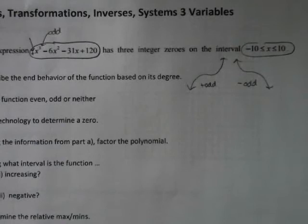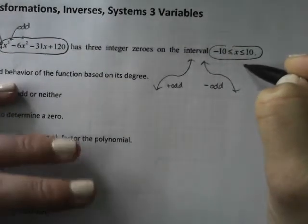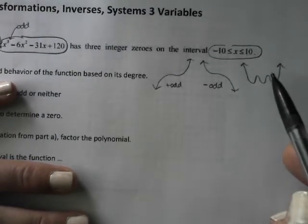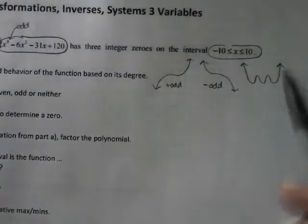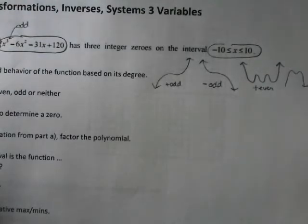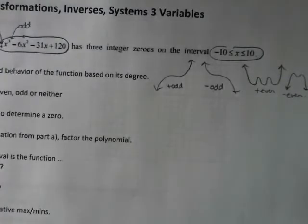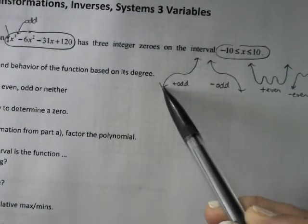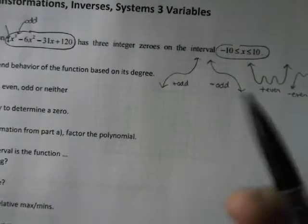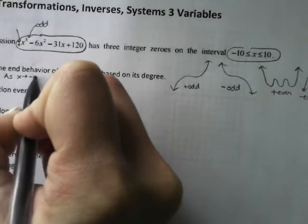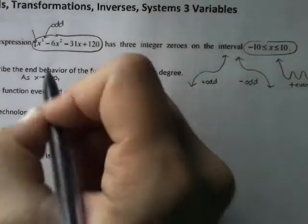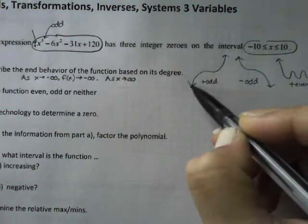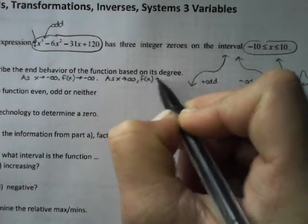For even degree, I think of it like a bowl shape — it could be as simple as a quadratic (x squared), or it could have fluctuations inside. Just like a parabola: if it opens up, it's positive even; if it opens down, it's negative even. For a positive odd, it starts coming from negative infinity and ends going toward positive infinity. Symbolically: as x approaches negative infinity, f(x) approaches negative infinity; as x approaches positive infinity, f(x) approaches positive infinity.